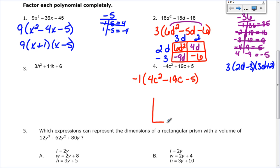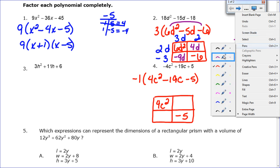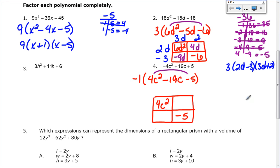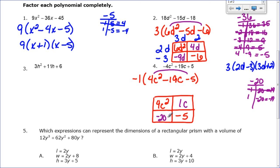Using the box method: 4c squared goes in the top left, negative 5 in the bottom right. Multiplying first times last: 4 times negative 5 is negative 20. I need two numbers that multiply to negative 20 and add to negative 19. Starting with negative 1 and 20 gives positive 19, so switching to 1 and negative 20 gives negative 19. So the middle term splits into 1c and negative 20c.